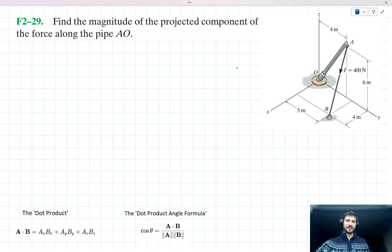Okay, so hello and welcome to this video tutorial for R.C. Hibbeler's Engineering Mechanics Statics textbook. We have this problem from chapter 2 which is asking find the magnitude of the projected component of the force along the pipe AO.